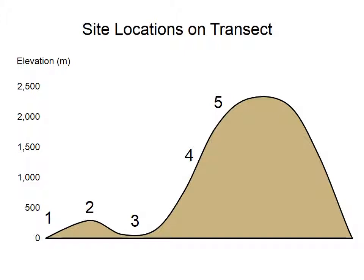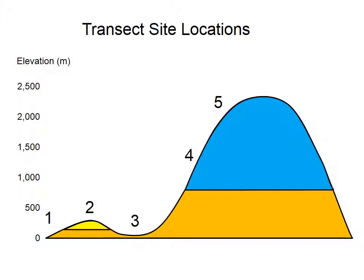Let us return to our experimental design. This is the diagram that shows the site locations along the transect. We now know the similarities of the sites as determined with the dendrogram. We group the sites by their similarities and give each group a color. Adding these colors to the transect diagram, we can see how elevation bands explain how sites are related. This is the pattern that we have been able to establish by using community analysis procedures.